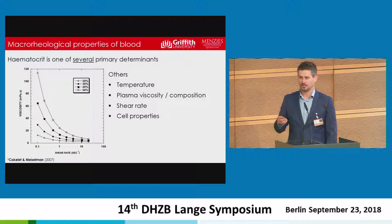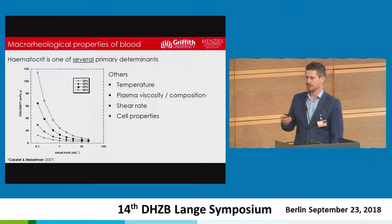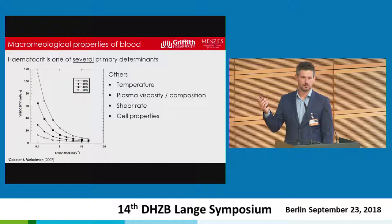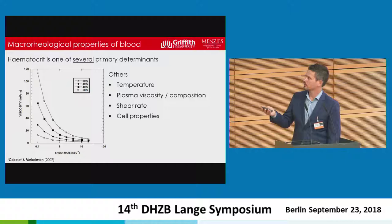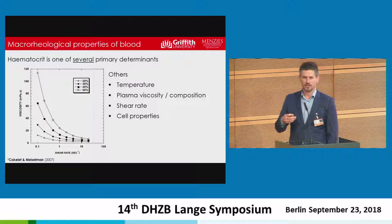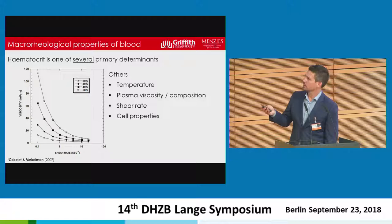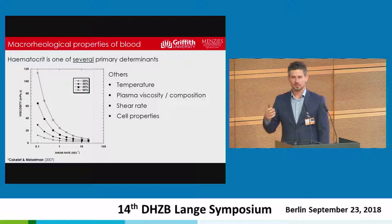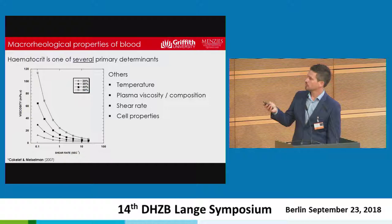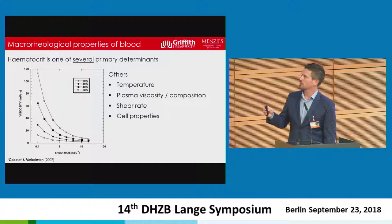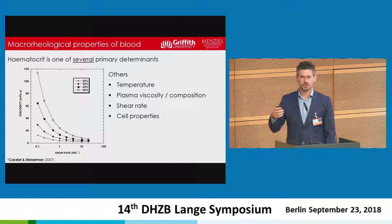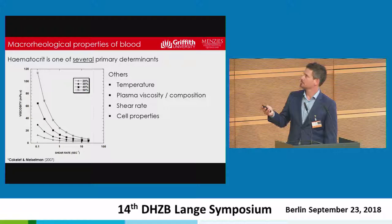Blood viscosity isn't a constant. Most medical textbooks throw in a 3.5 or 3.8 millipascal-second value and focus on vessel radius. But blood viscosity is far from constant — it's actually the classic shear-thinning fluid. On the y-axis we have viscosity, on the x-axis shear rate, which is quite similar to flow rate in a cylindrical tube. All four curves show a shear-thinning effect: blood becomes less viscous as we increase the flow rate. Hematocrit is one of the primary determinants, ranging here from 20% to 50%.